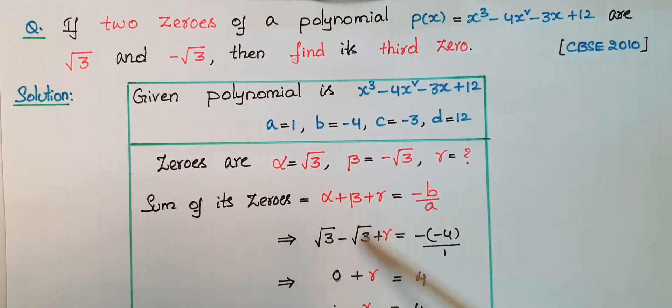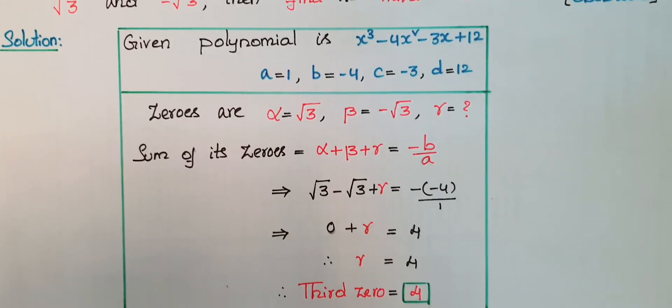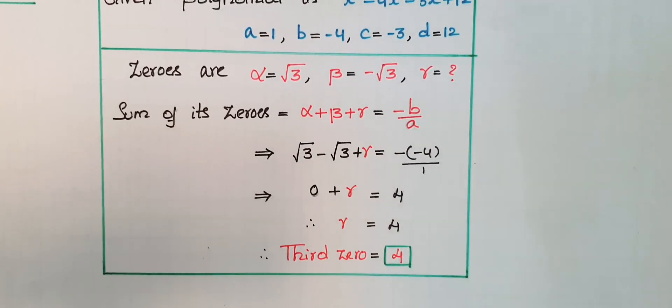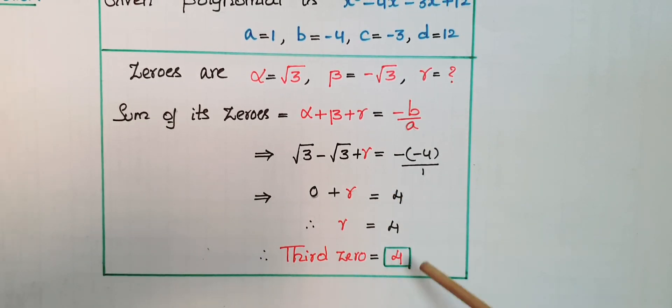This simplifies to 0 + γ = 4, therefore γ = 4. The third zero is 4.